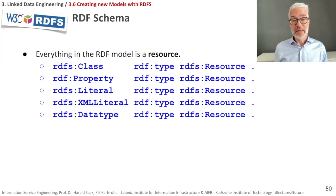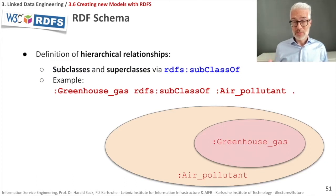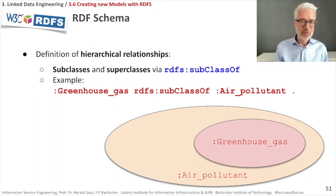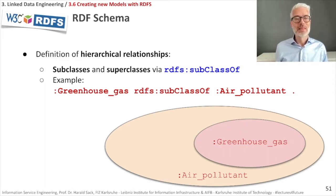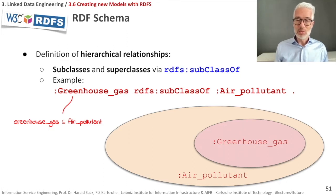One more thing: I can also relate classes with each other in a hierarchical relationship. So I can define subclasses and superclasses. For that, I have one specific property: rdfs:subClassOf. I can say, for example, that greenhouse gas is a subclass of air pollutant, which means all greenhouse gases are air pollutants. However, there are some air pollutants which are not greenhouse gases. You see this as a Venn diagram here. Greenhouse gas is a subclass — or subset — of air pollutant, as seen in the set-based notation. I can write a quick RDF statement that gives exactly this hierarchical relationship between the two classes.